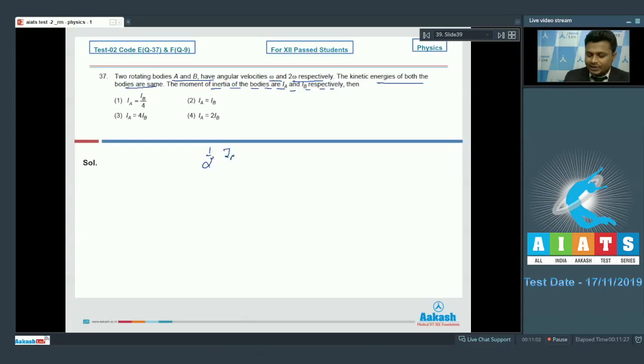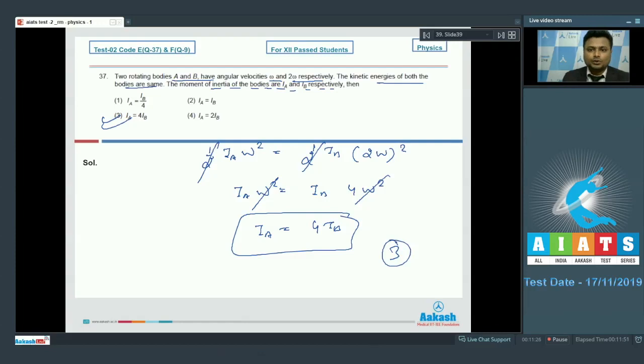Solving it, half half cancel out. IA omega squared is equal to IB times 4 omega squared. Omega squared cancel out. We have got IA equal to 4 times IB. Option number 3 we can go with.